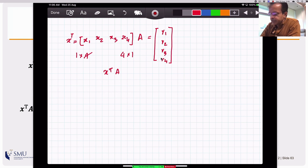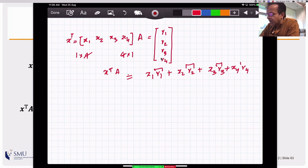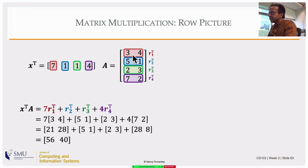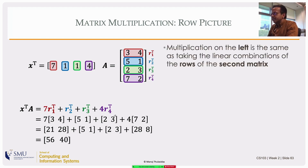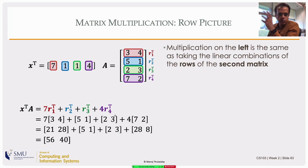That scalar would equal x1*r1 + x2*r2 + x3*r3 + x4*r4 if the rows were numbers. But when the rows are not single numbers but pairs of numbers standing side by side, the same idea works — you multiply blocks of two numbers by a single scalar on the left. Multiplication on the left is the same as taking the linear combination of the rows of the second matrix, with scalars defined by the elements of the left matrix. So x^T A is a linear combination of the rows of A by the elements of x^T.